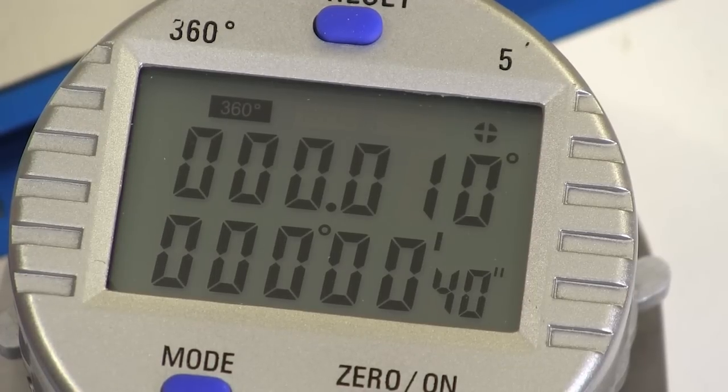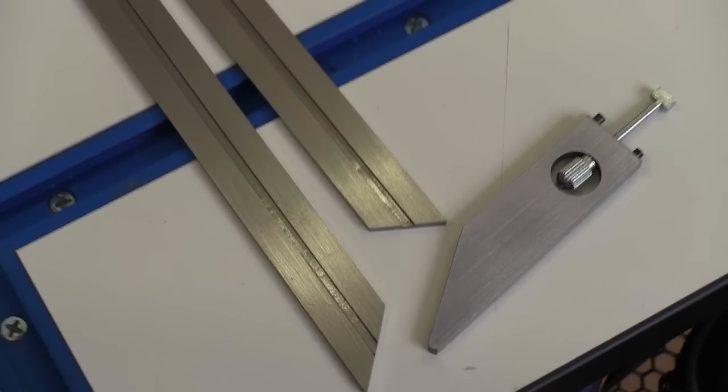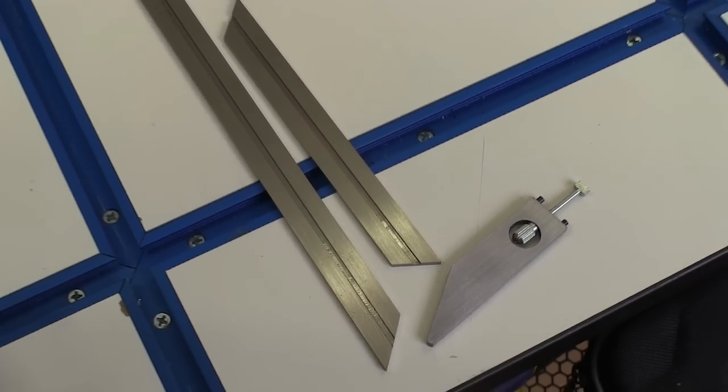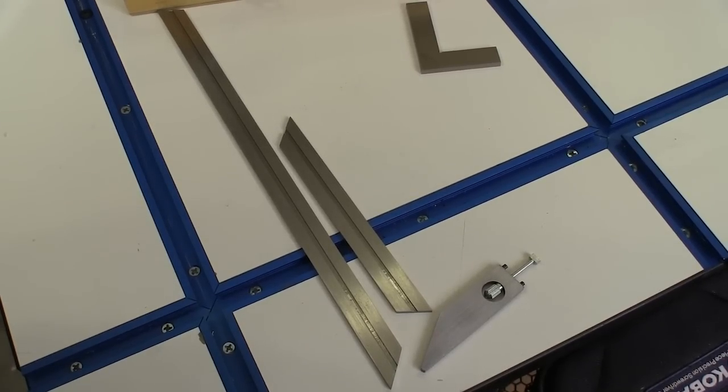The long blade ends are machined at precisely 30 and 45 degrees. The acute angle arm has a 60 degree angle on it.